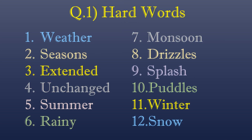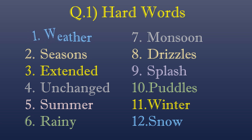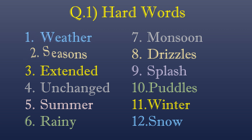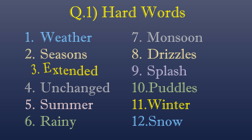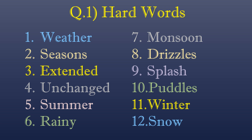Now we will see hard words. Number one: W-E-A-T-H-E-R, weather. Number two: S-E-A-S-O-N-S, seasons. Number three: E-X-T-E-N-D-E-D, extended. Number four: U-N-C-H-A-N-G-E-D, unchanged.